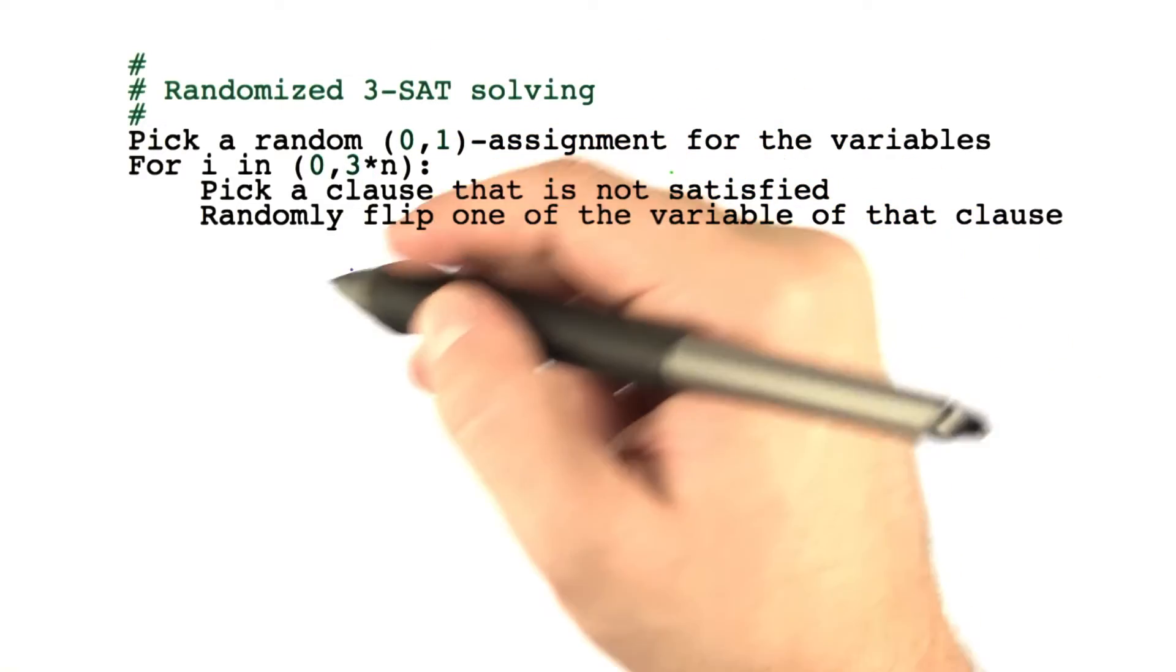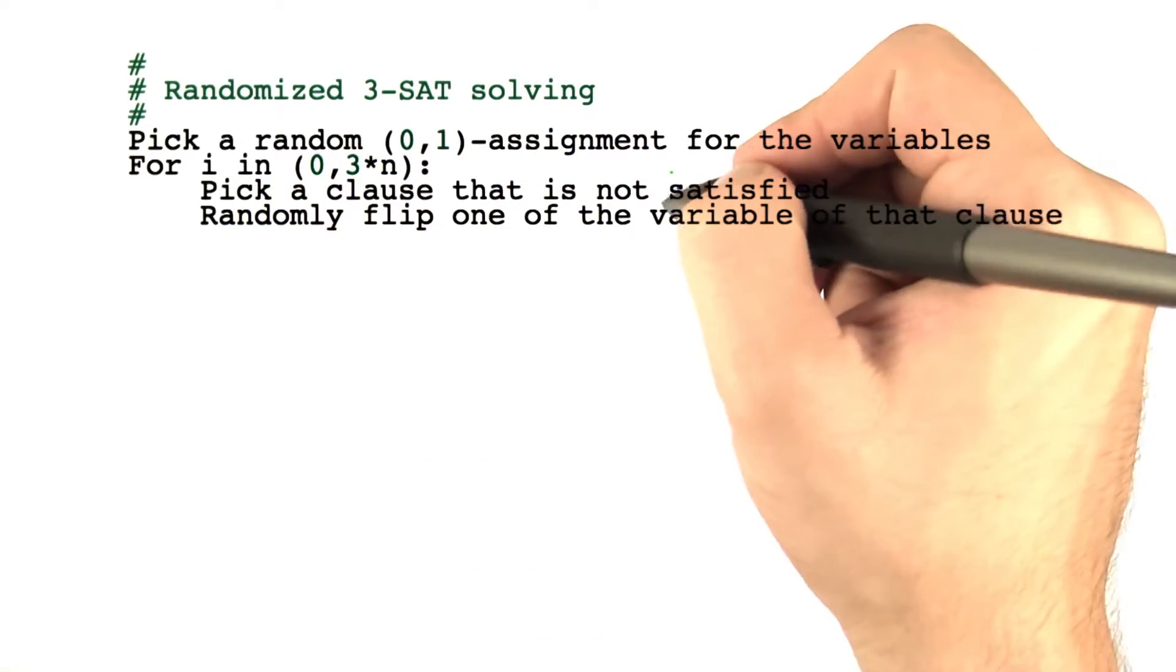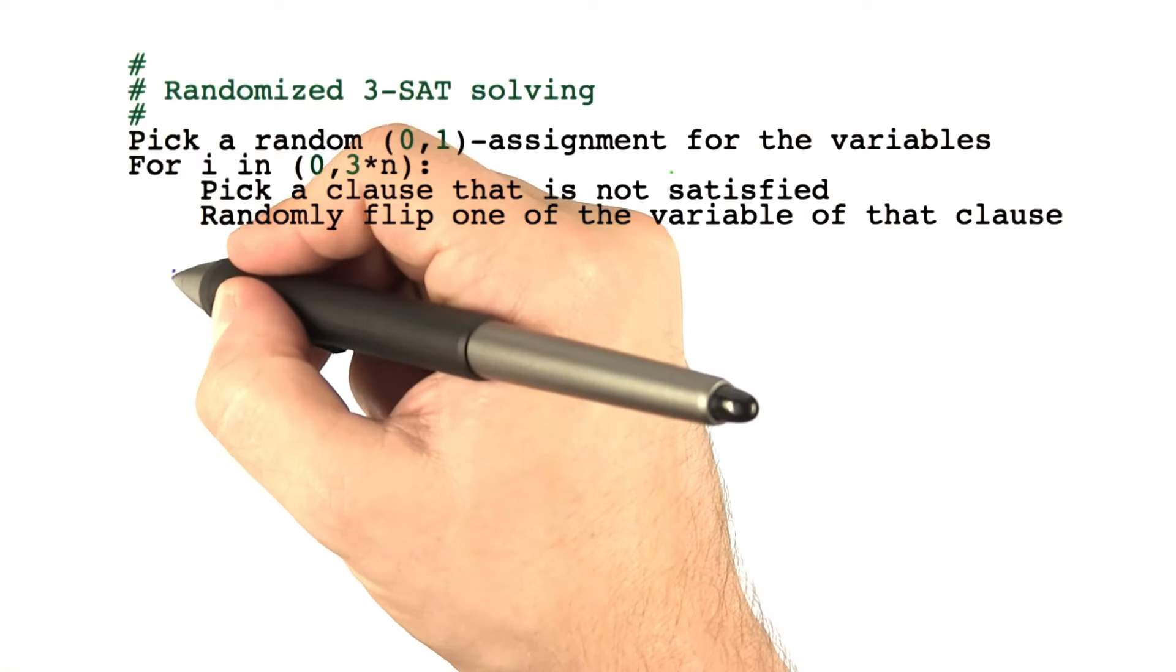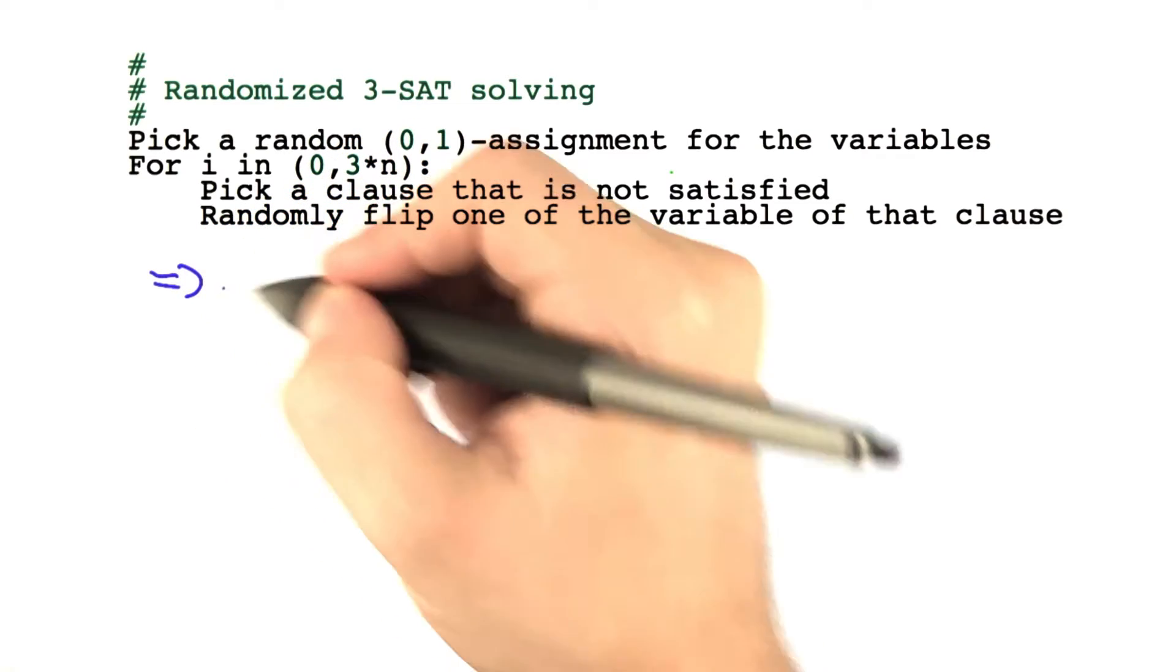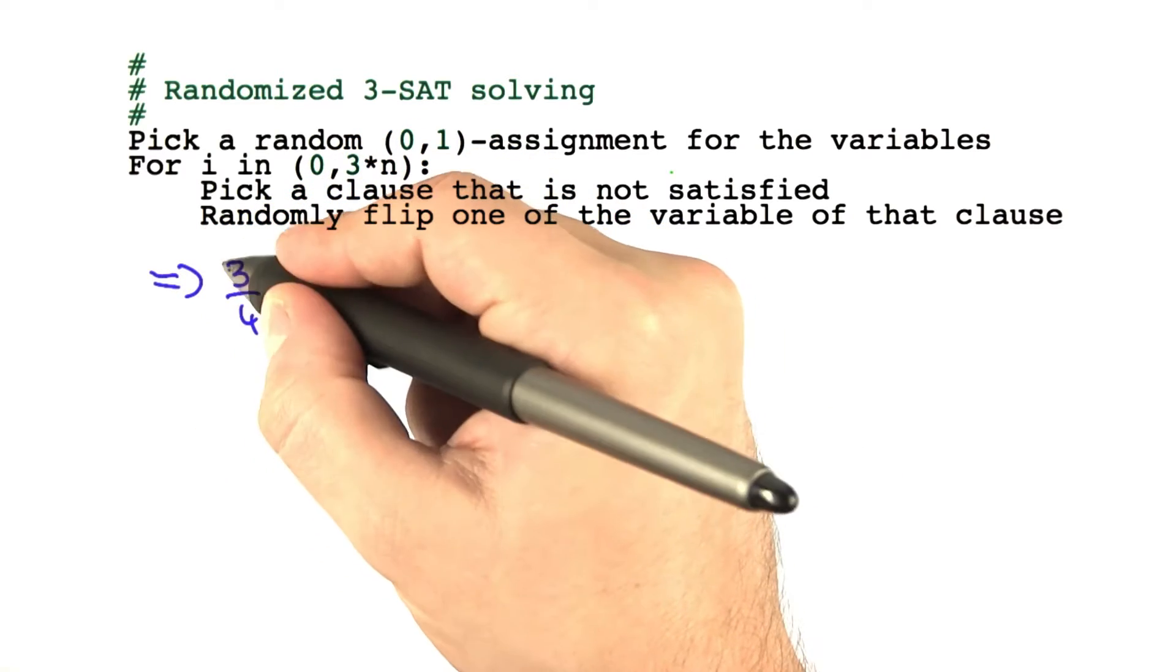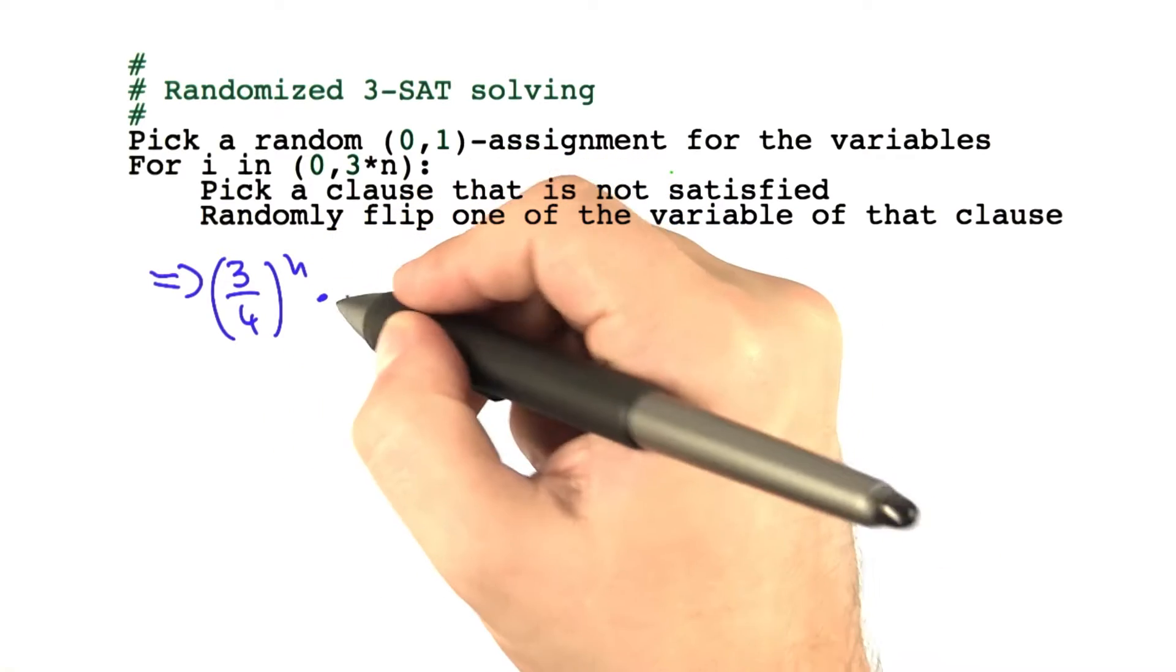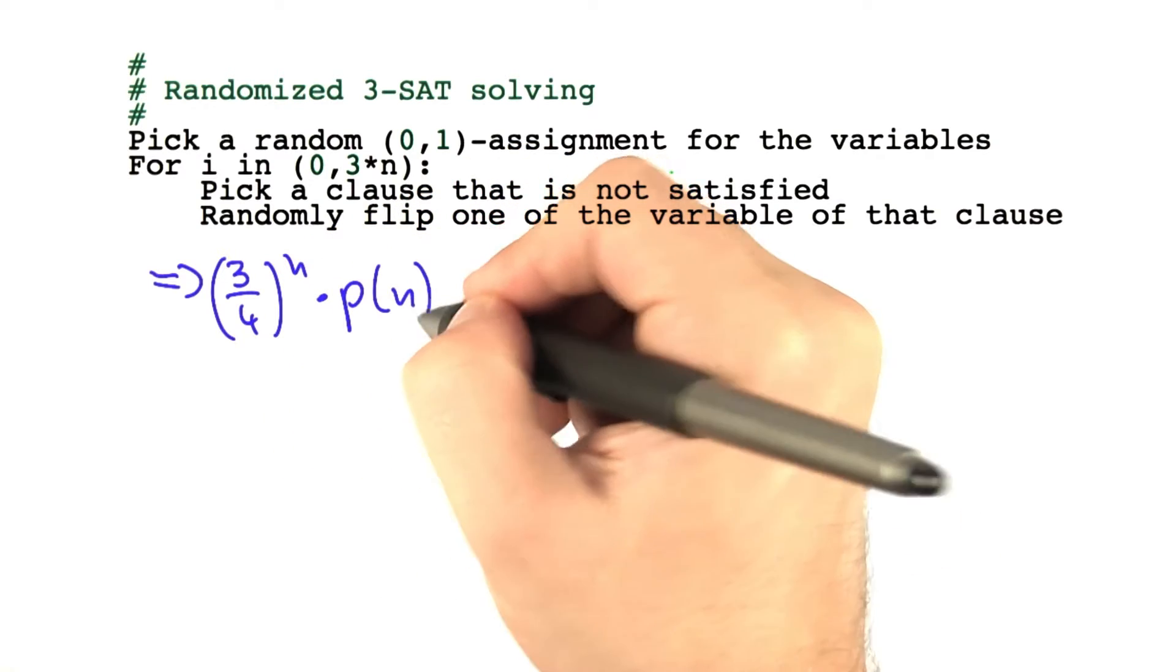The exact analysis of this algorithm reveals that if the Boolean formula has a satisfying assignment, then this assignment is found with a probability of about three-quarters to the power of n times some polynomial of n. I'll just write that as p here.